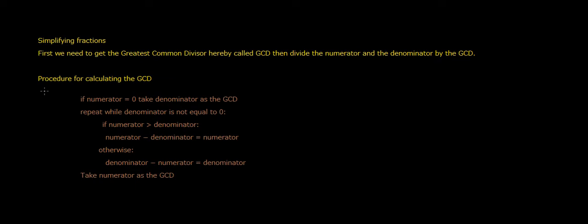This is the procedure for calculating the GCD. If the numerator is equal to zero, take the denominator as the GCD. Repeat while the denominator is not equal to zero. If the numerator is more than the denominator, subtract the denominator from the numerator and make that the new numerator.